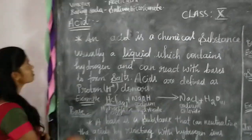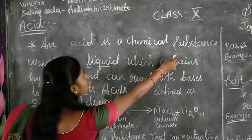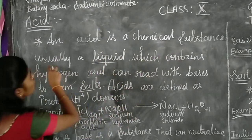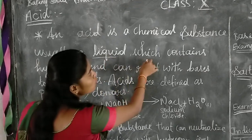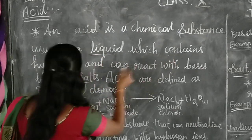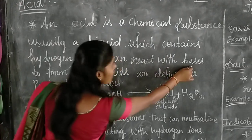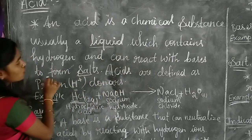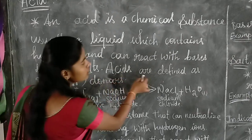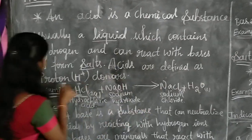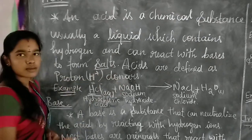First, acid. An acid is a chemical substance, usually a liquid, which contains hydrogen and can react with bases to form salts. Acids are defined as proton donors.